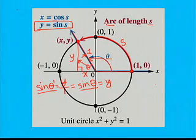And by similar reasoning, which I won't take us through to the right triangle, we have that the cosine of the arc length s is equal to x.